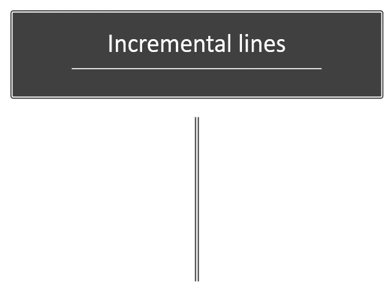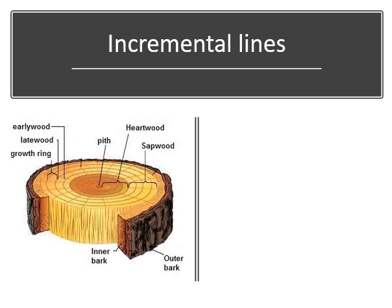Incremental lines are lines formed through incremental deposition or rhythmic formation of any material. An example is a tree: if you look at the concentric rings visible at the center after the outer bark, these lines actually show us the age of the tree — you can calculate it by counting the rings from the outer circle to the inner circle.